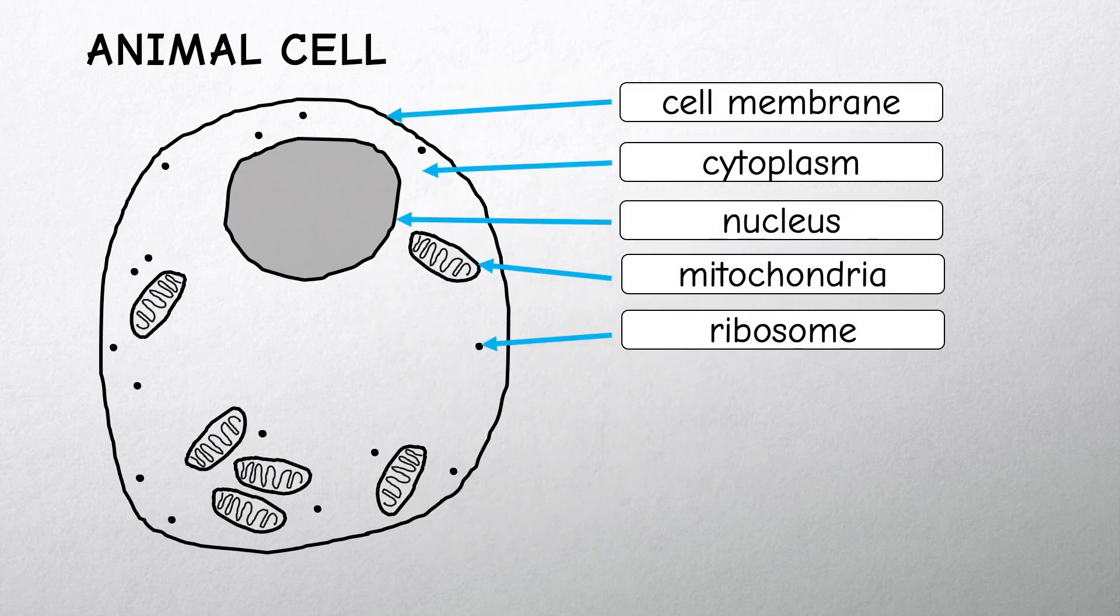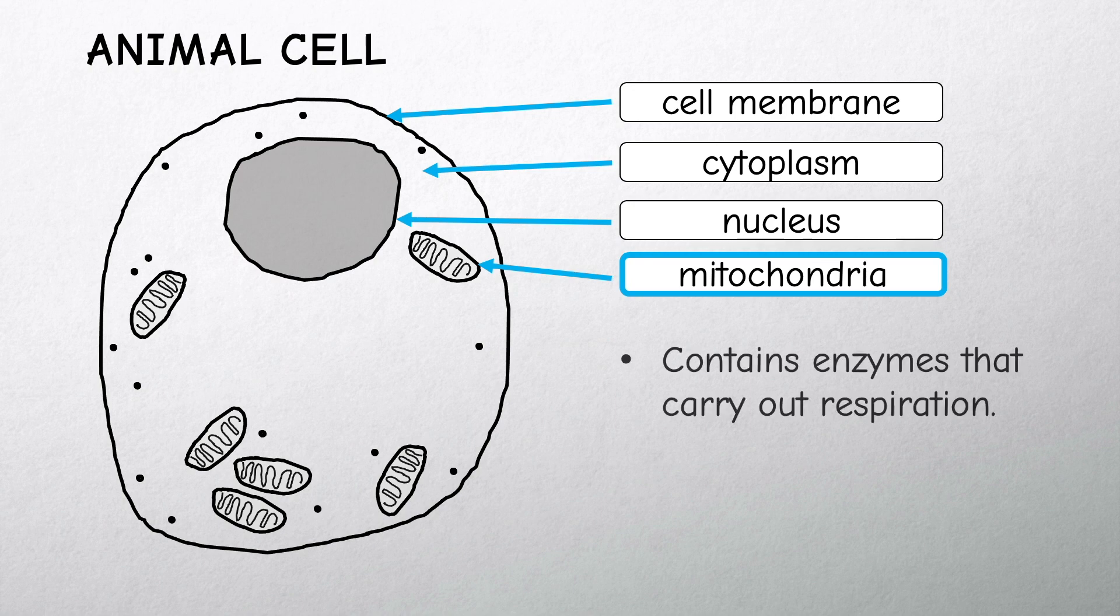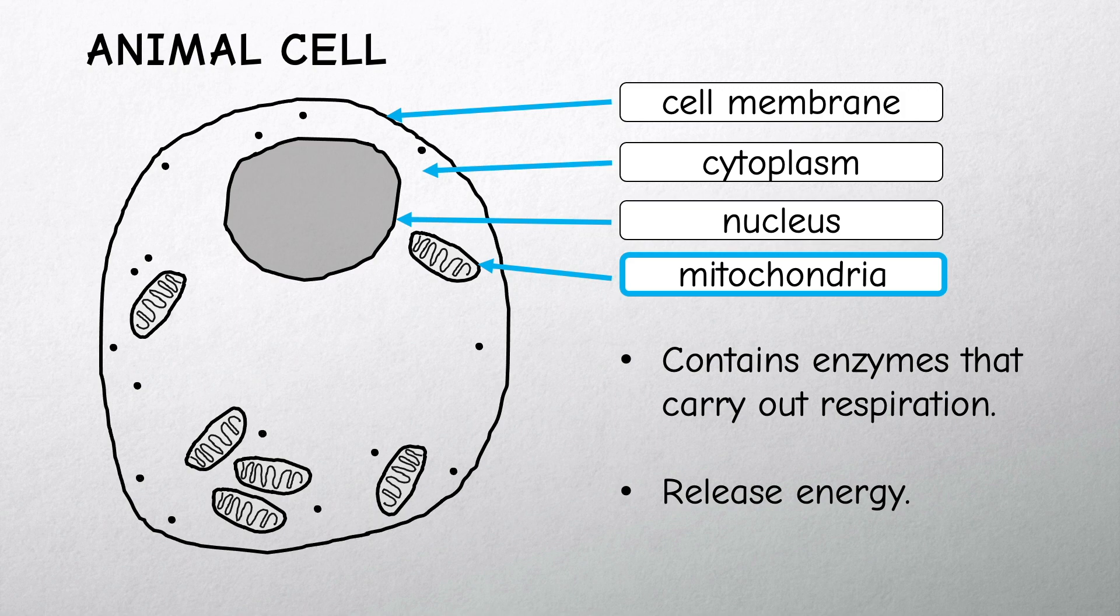Mitochondria are the powerhouses of the cell. They are sausage-shaped organelles that contain the enzymes that carry out respiration. This is the reaction that releases energy.